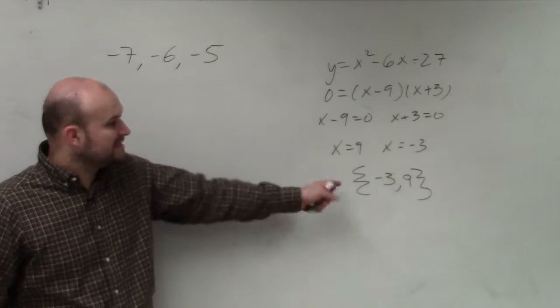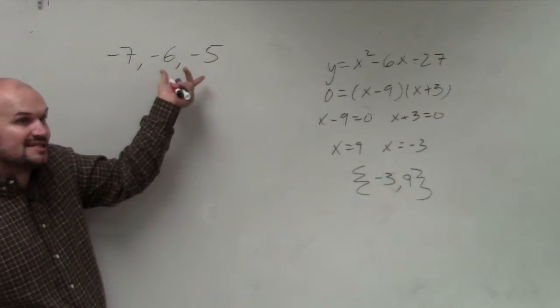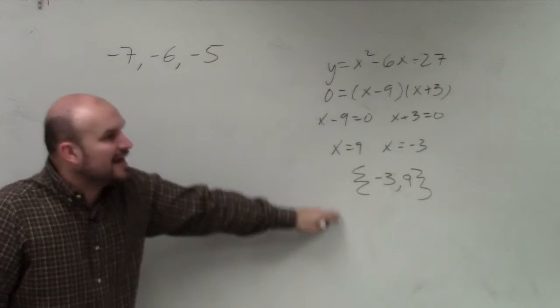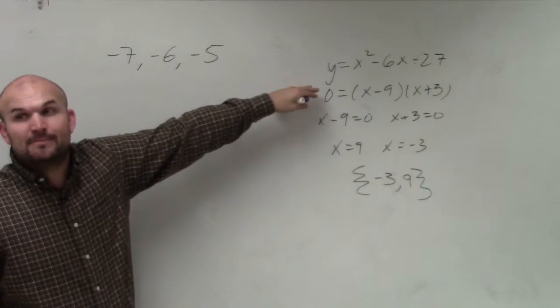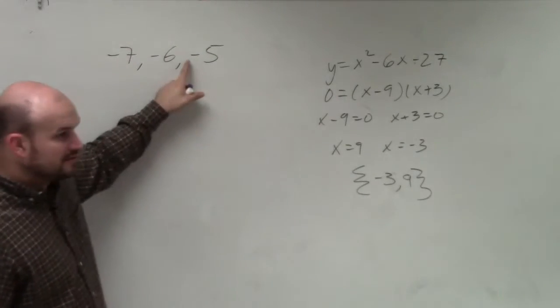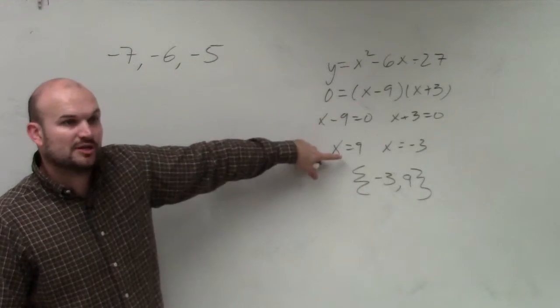So now, all you guys are going to do is I'm giving you the solution set. I'm giving you the zeros. I want you to write the polynomial. So you're literally just going to work your way backwards. So if these are my zeros, the next step is to set them all equal to x.